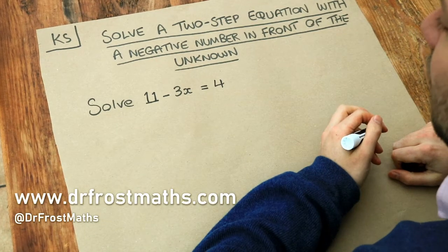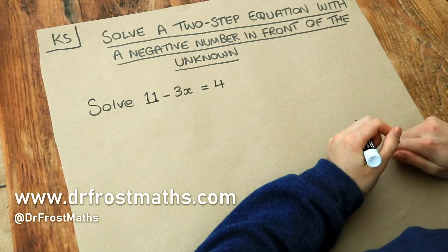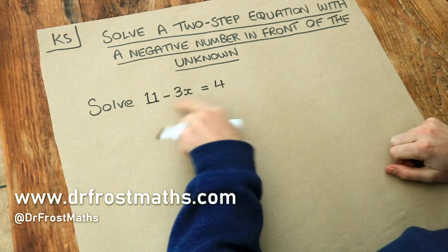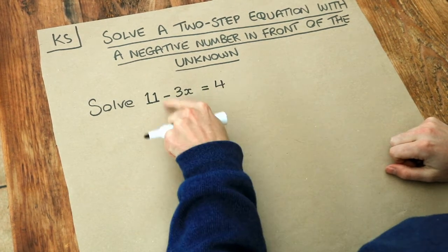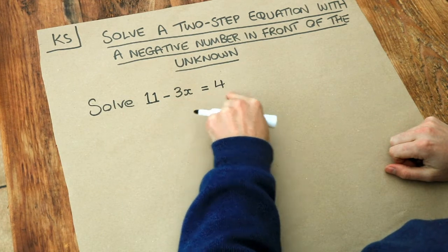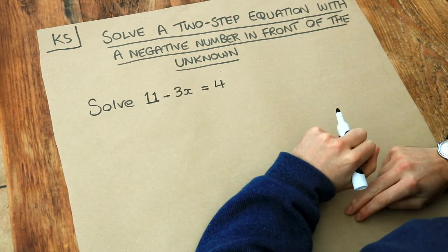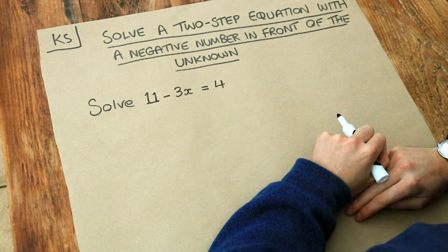Hello and welcome to this Dr. Ross Mass's key skill video on solving a two-step equation with a negative number in front of the unknown. So we've got an equation like this, 11 minus 3x is equal to 4, and we want to solve, that means to find the value of x.